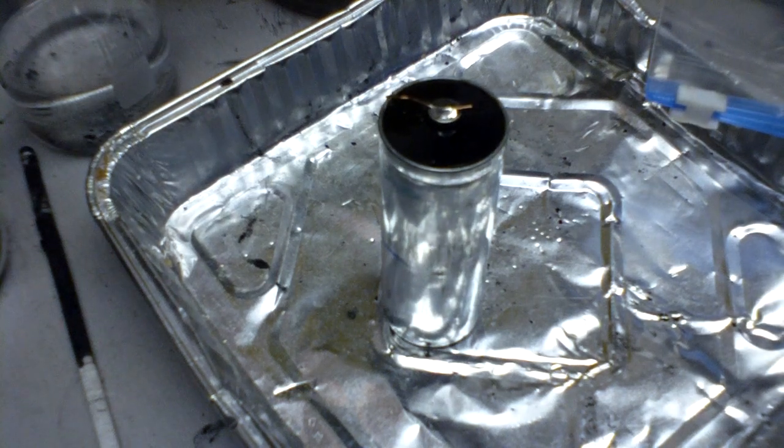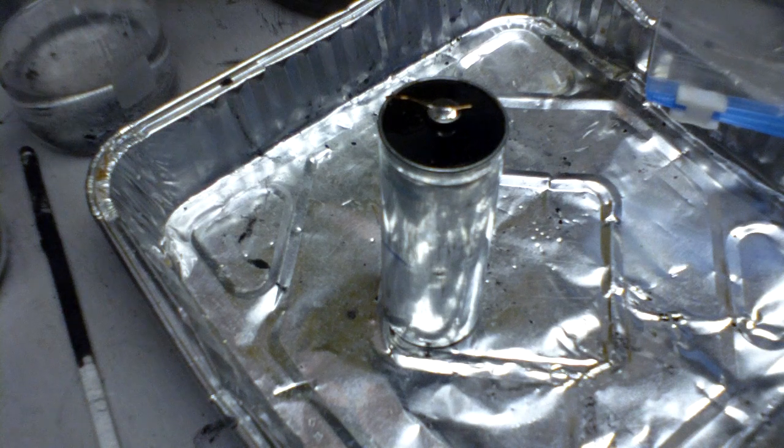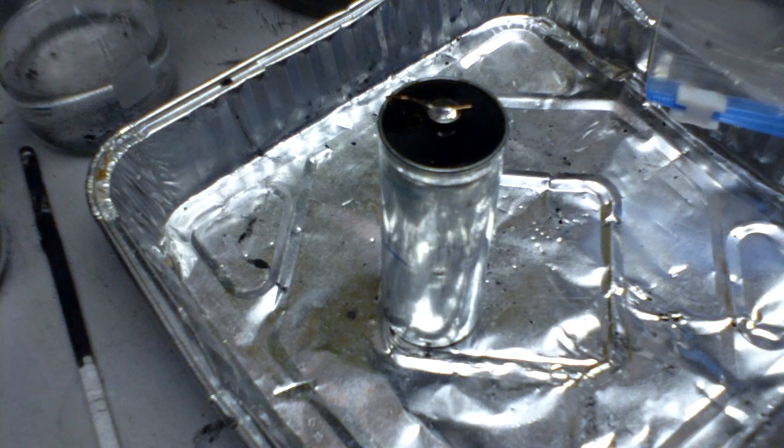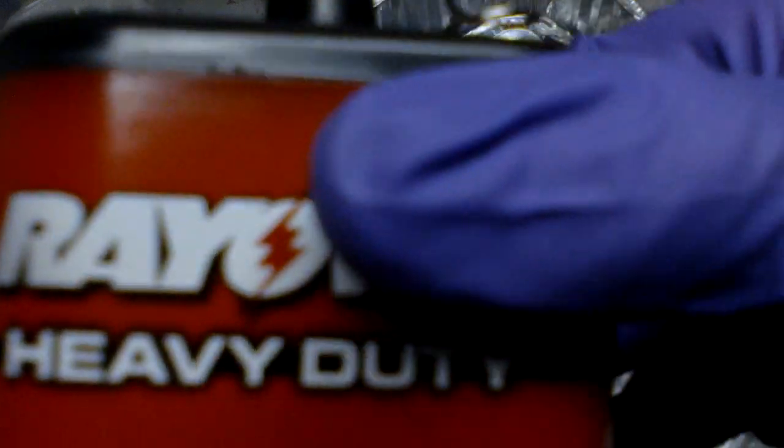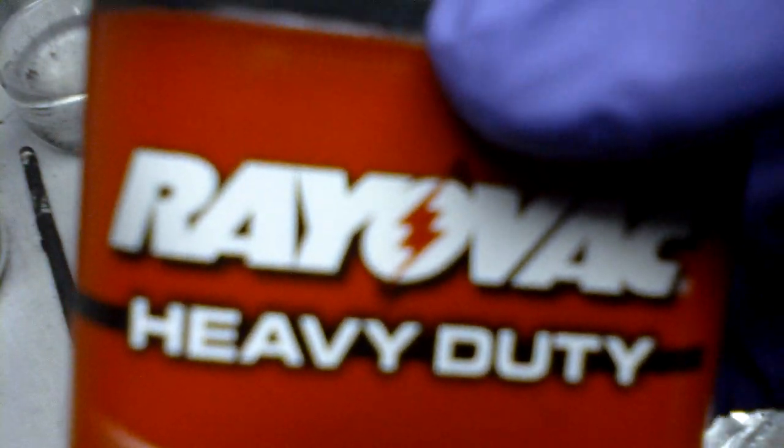The first step is to acquire a 6 volt lantern battery, and not all batteries are the right type for this. The battery should say on it heavy duty, super heavy duty, or something along those lines.